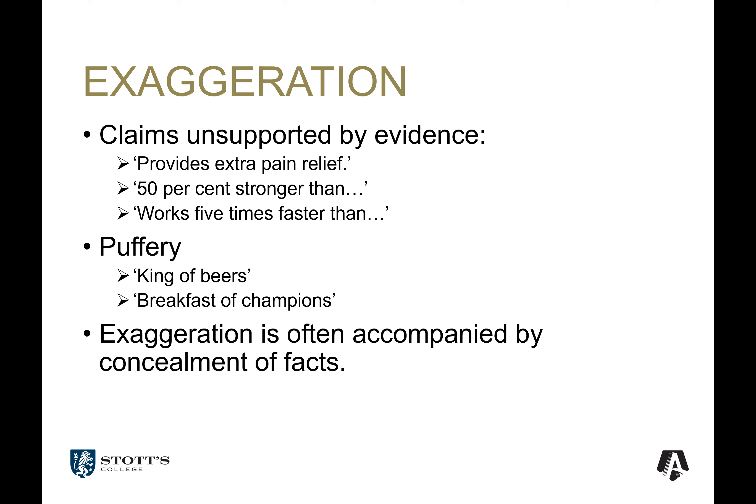Consider 'provides extra pain relief' — what does that mean? Just recently, Nurofen was advertising targeted pain relief. You would pay a lot more for Nurofen — which is just ibuprofen — targeted for back pain, migraine, knee pain, or flu pain. It was the same product; you were just paying more because supposedly it was targeted. '50% stronger than' — is 50% stronger worthwhile? 'Works five times faster' — how did they arrive at five times faster? Was it a survey of one person who said it seemed to work five times faster for them?